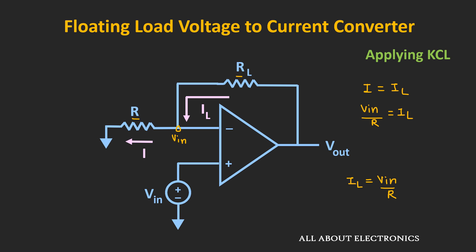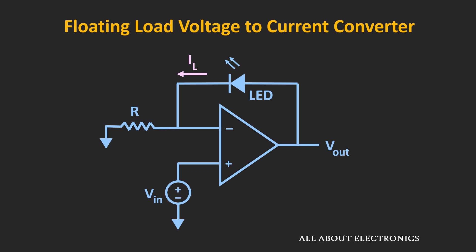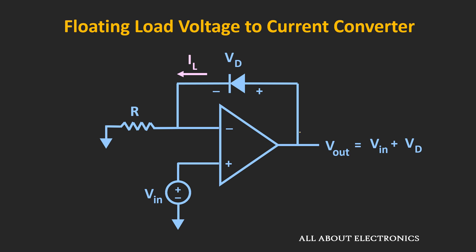This type of circuit can be used to drive LEDs, because once you set the value of resistor R and the input voltage VIN, the current flowing through the LED will be constant. If you change the value of the input voltage, the current through the LED will change, and you can use this circuit to test the brightness of different LEDs for constant current. Similarly, this type of converter is useful in finding matched pairs of diodes or matched pairs of zener diodes. For example, if you connect a diode in this circuit, the output voltage Vout will be equal to the input voltage VIN plus the forward voltage developed across the diode. By measuring the output voltage at the output terminal, we can find two exactly matched diodes which have the same value of Vd. Similarly, we can also find matched pairs of zener diodes.